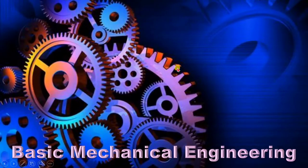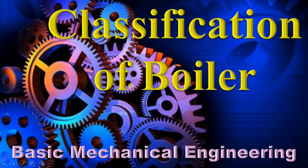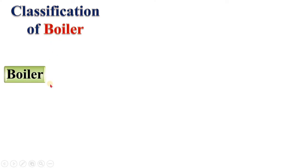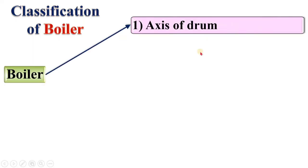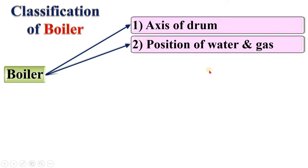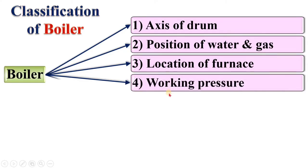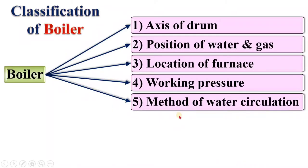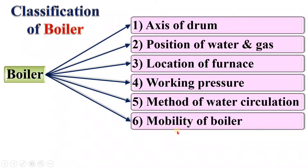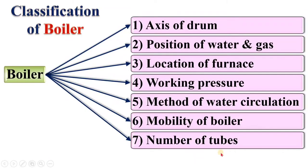Welcome to my basic mechanical engineering playlist. Today I am going to discuss the classification of boilers. The classification is done according to: axis of drum, position of water and gas, location of furnace, working pressure, method of water circulation, mobility of boiler, and number of tubes. Let's see all these types of classification briefly with examples.